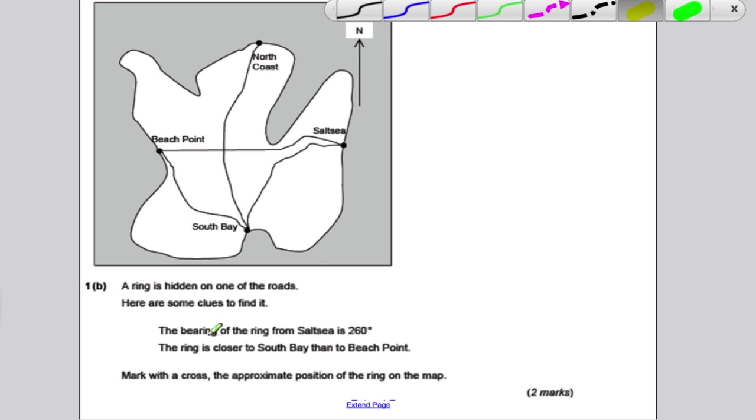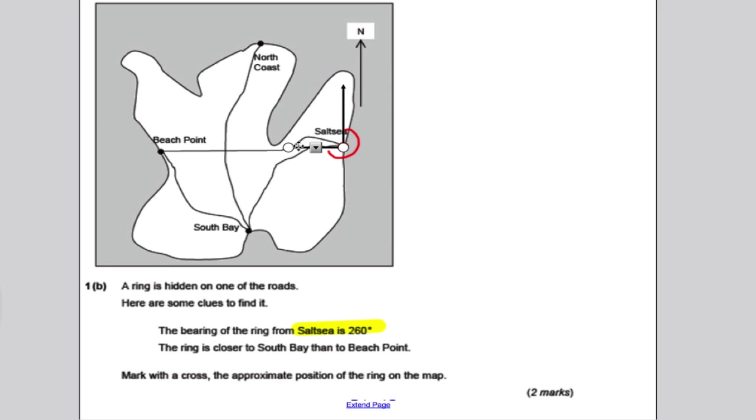It says the bearing of the ring from South Sea is 260. So from South Sea, we want to go on a bearing of 260. Now, always measure from the north. I'm not even going to get the protractor out here to measure, because I know that 270 would be three right angles, would look like that. That would be 270, so 260 is a little bit less than that. So I'm going to just say, just keep that where it is. So I'm just going to move that to somewhere like there. That's about 260. That's just an approximation. It does say here, approximate. It doesn't say measure exactly.